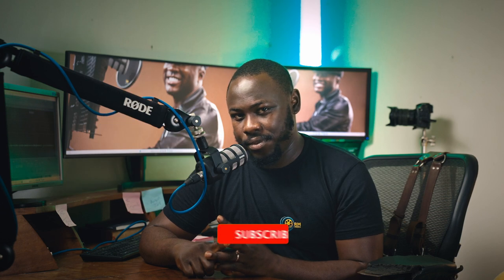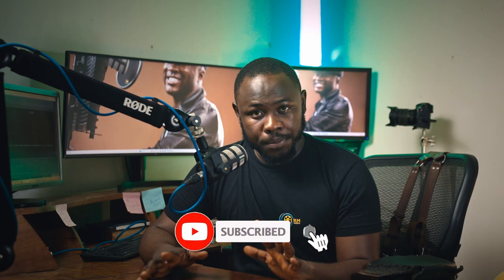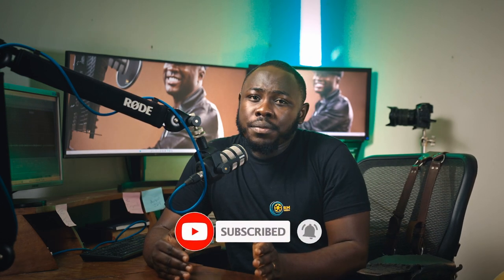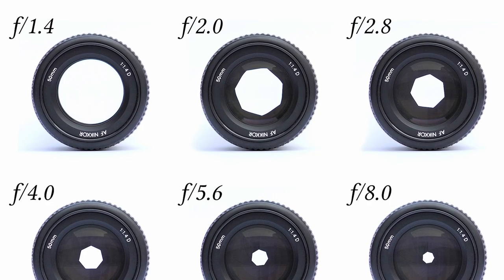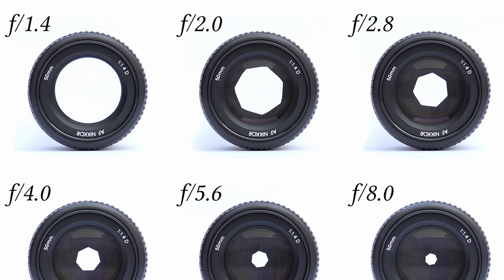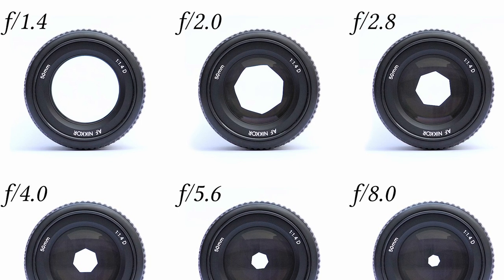Looking at the aperture — the aperture is one mechanism that determines how much light is going to hit your sensor by how wide it opens or how small it closes. The aperture opens wide to ensure that light hits your sensor, and it closes to prevent light from hitting your sensor. When light hits your sensor, your image becomes bright.